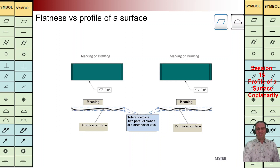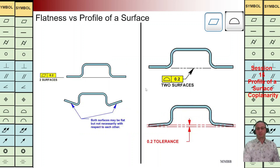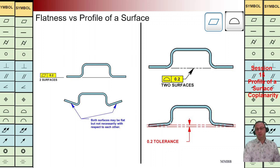If I'm going to check flatness of one surface and profile of surface for one surface, they have exactly the same meaning — we are going to have two parallel surfaces and the same tolerance zone. But when we control flatness of two surfaces, we check each wavy surface separately. Whenever we use profile of surface and write two surfaces, it means we are going to check co-planarity based on the mid-plane of these two surfaces. There is a big difference between these two.